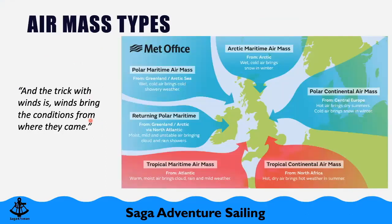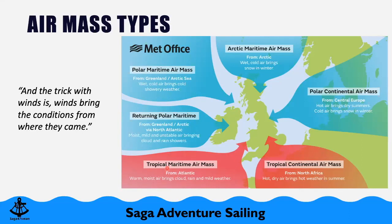Air masses — if we know what kind of air is coming with the wind, we know what conditions it will bring. In the UK, the prevailing winds are south-westerly, meaning the wind comes from the Atlantic. This is called a tropical maritime air mass — it's warmish and full of moisture because it travels over the sea, so when it arrives it normally brings clouds, rain, and mild weather.